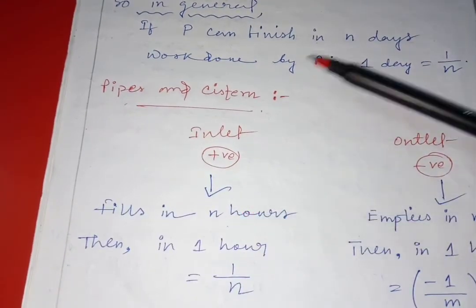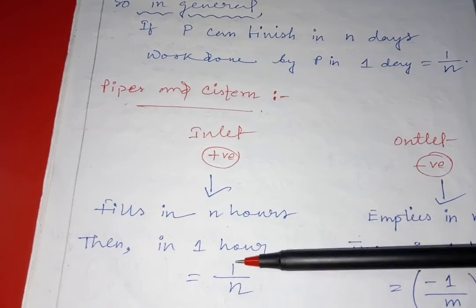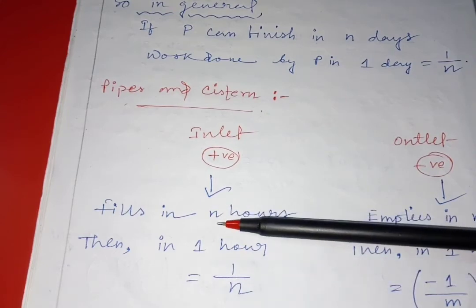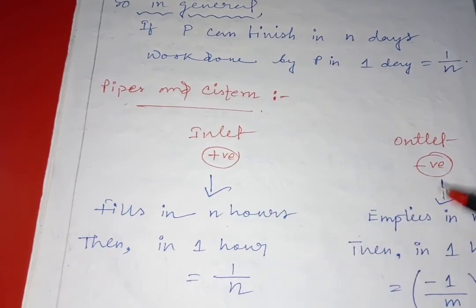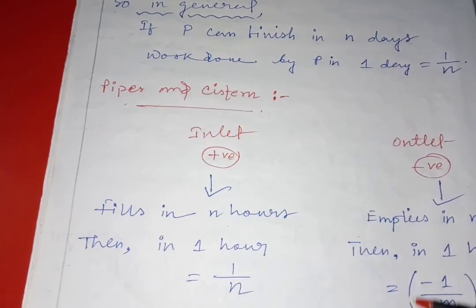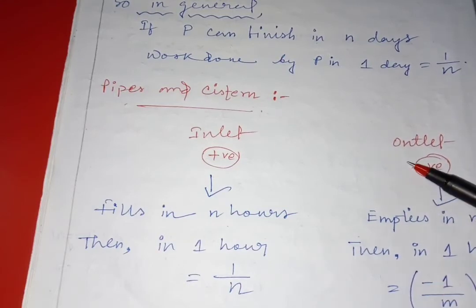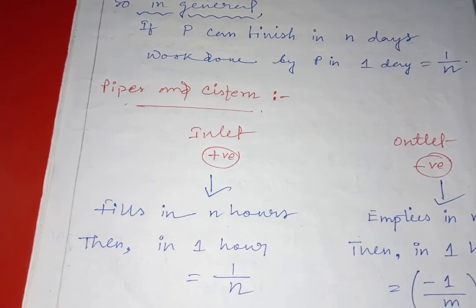Same concept — one over the number. If it is filled in two hours then it should be one by two; if filled in three hours, one by three. But for an outlet, if it empties in m hours it should be minus one by m. Because it empties the tank, that's why minus one by m. These are the pillars of this chapter, time and work.